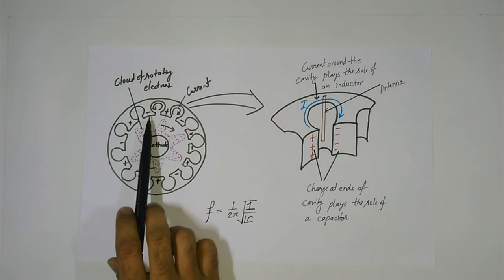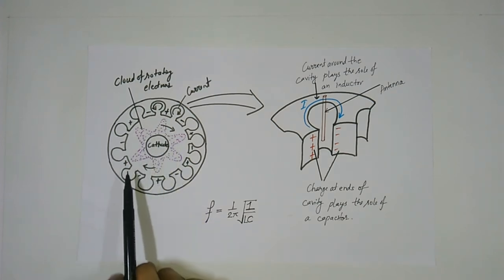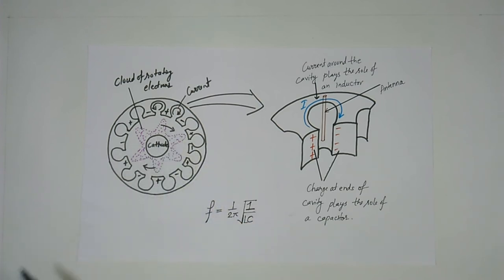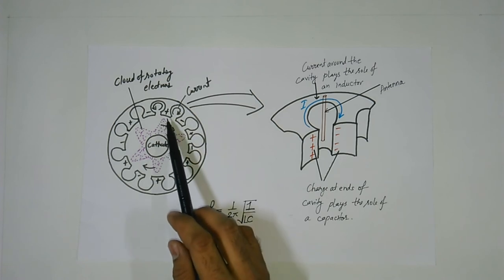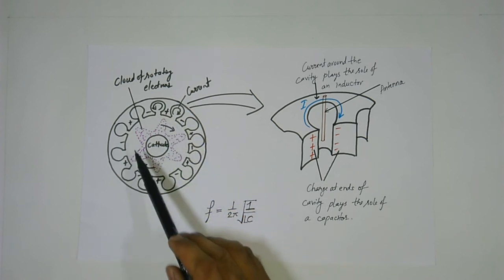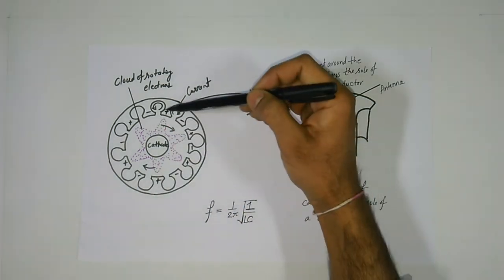The negatively charged vanes then repel the electrons rotating within the electron cloud. The effect of this is that the electron cloud forms into a pinwheel shape. As the cloud rotates, the anode vane closest to the spokes of the pinwheel has an induced positive charge and the neighboring vane has an induced negative charge. As the cloud rotates the positive and negative charges in the vane repeatedly oscillate.